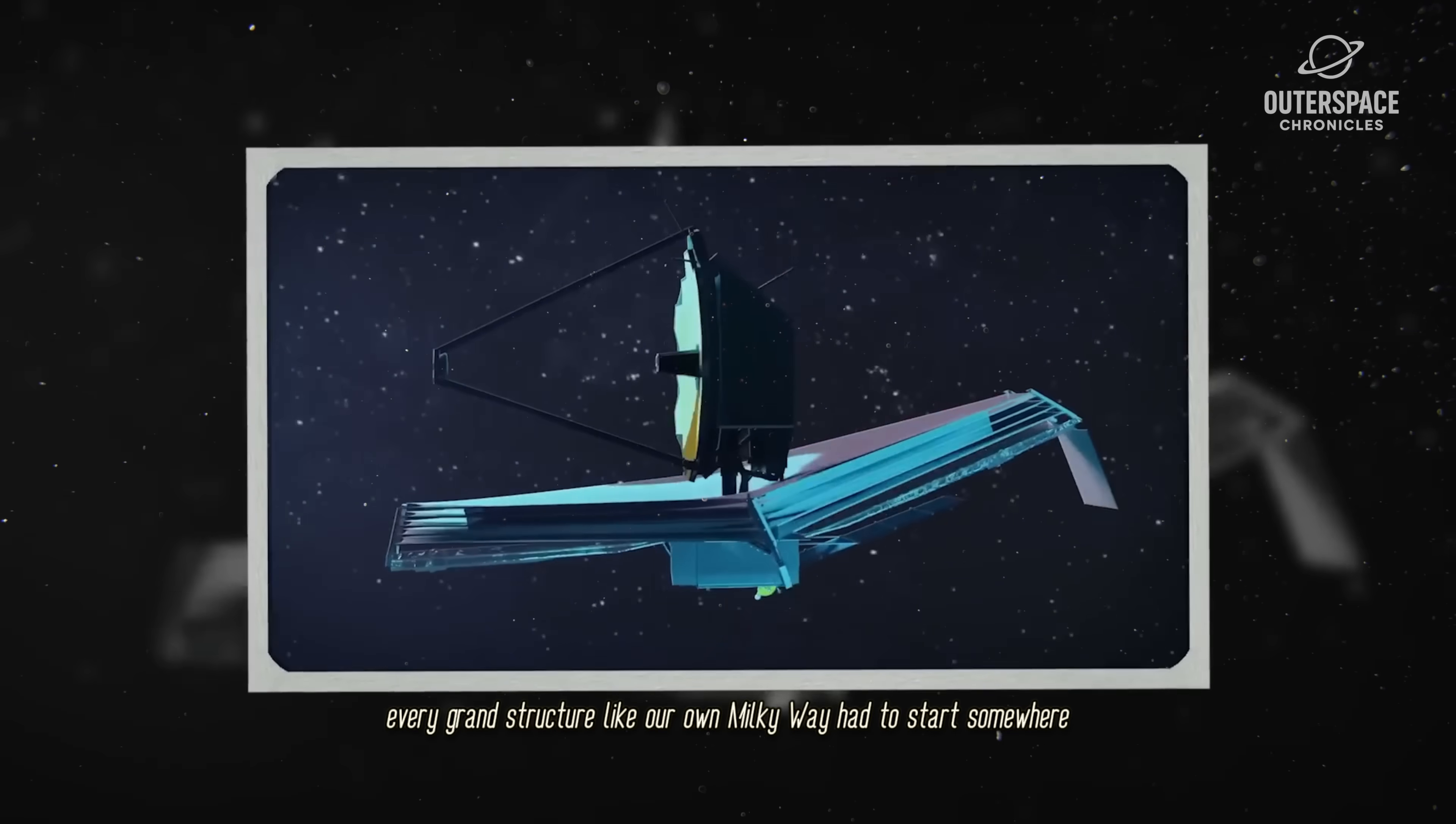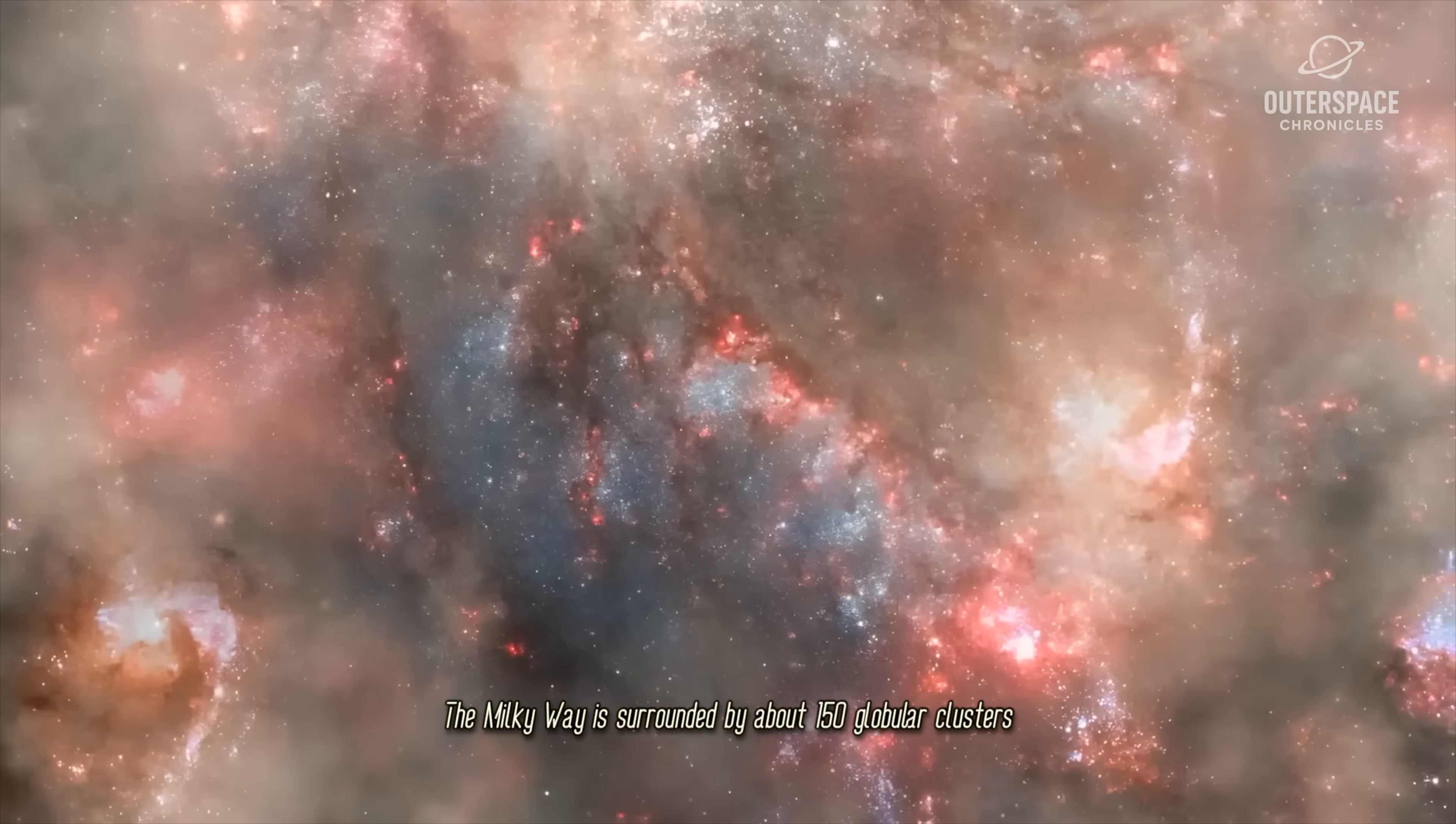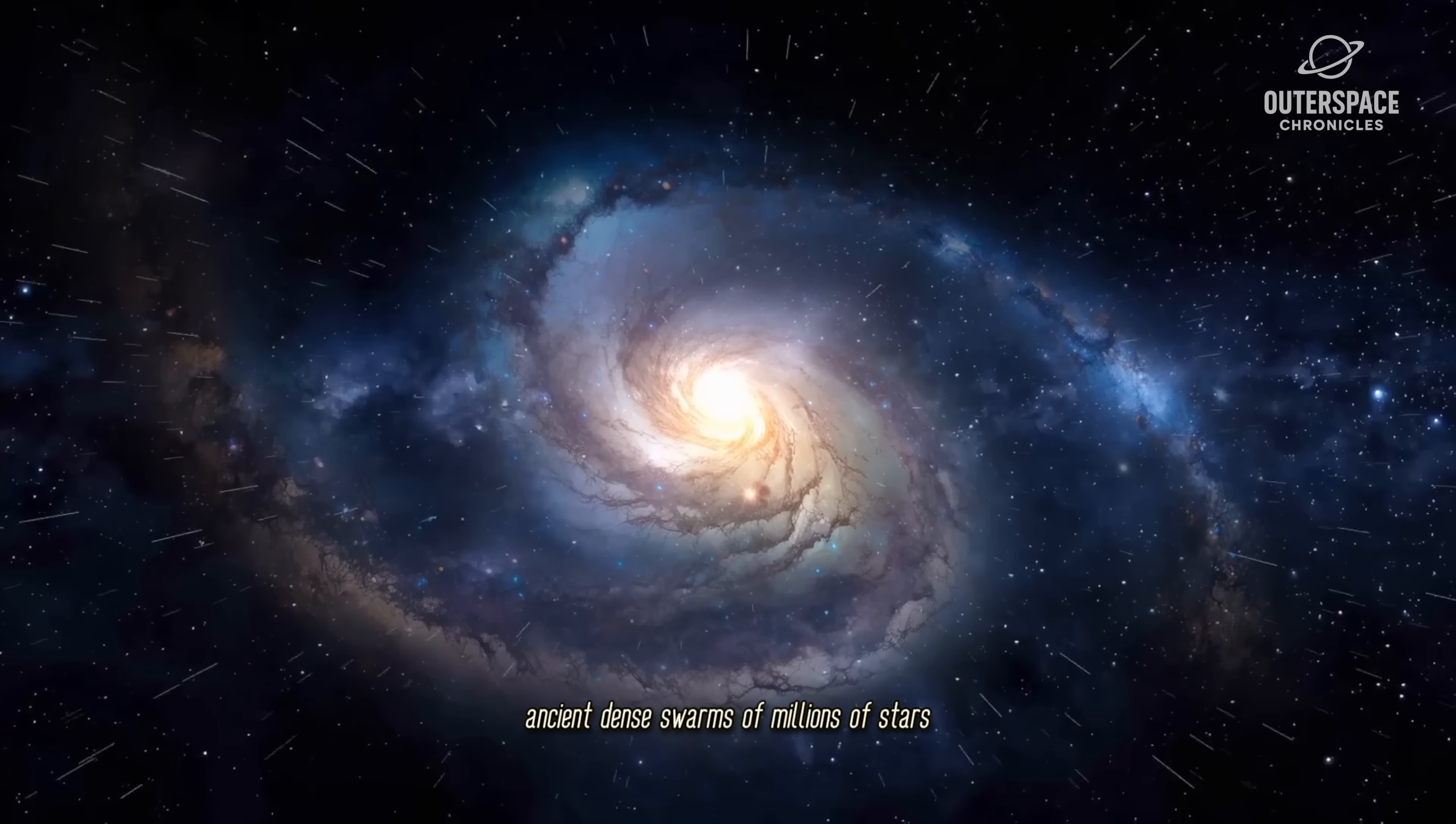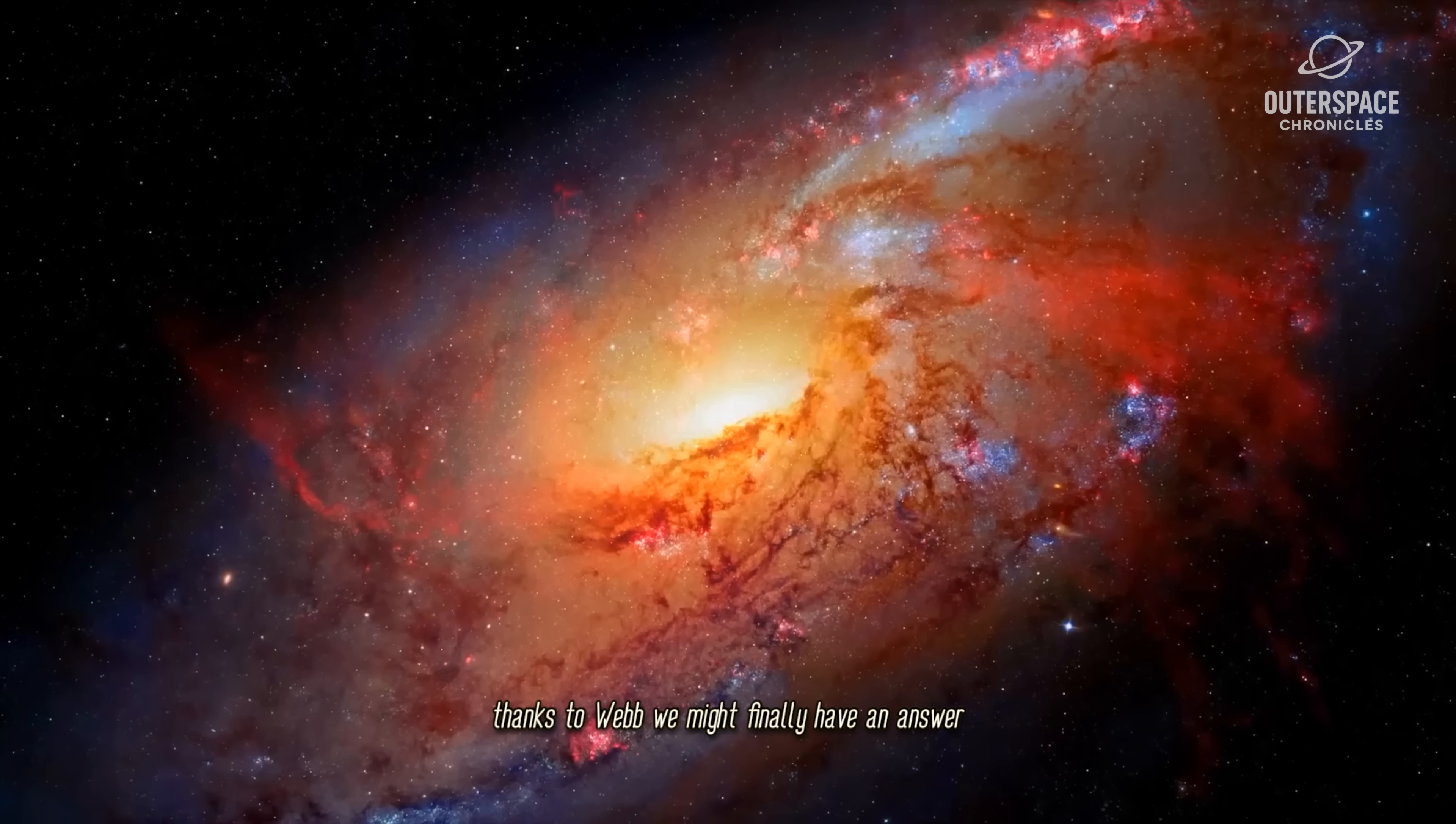Every grand structure, like our own Milky Way, had to start somewhere. The Milky Way is surrounded by about 150 globular clusters, ancient, dense swarms of millions of stars. But when and where did they form? Thanks to Webb, we might finally have an answer.